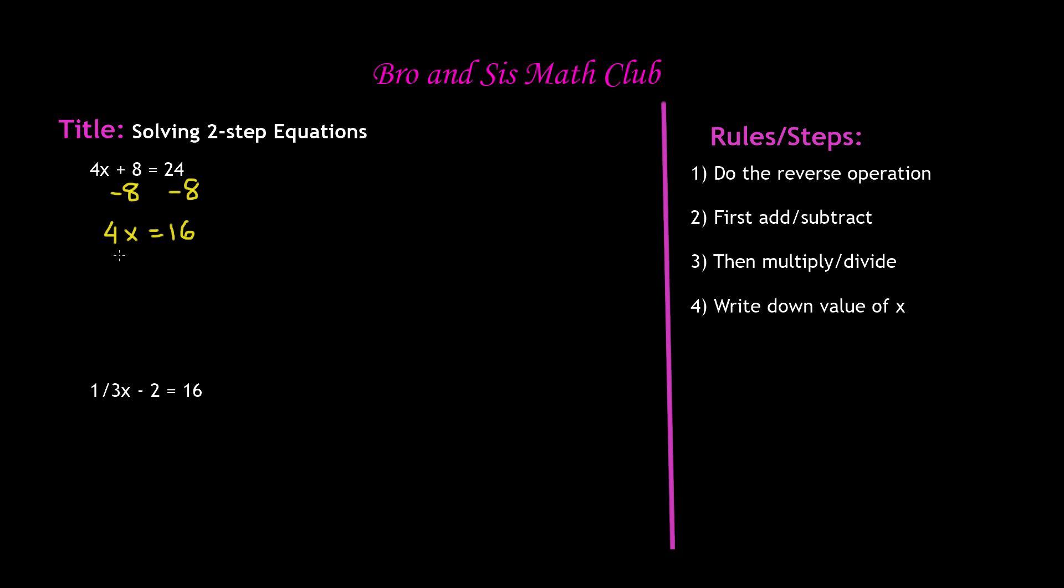In this case, 4 is being multiplied to x. So in order to eliminate the 4, we'll have to divide both sides by 4. So that means we get x is equal to 4 since 16 divided by 4 is 4. So we get x is equal to 4.